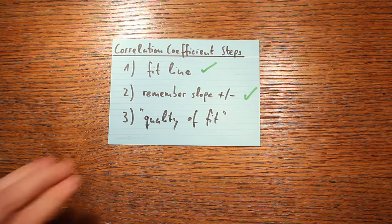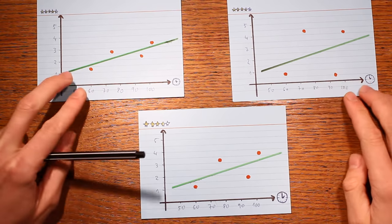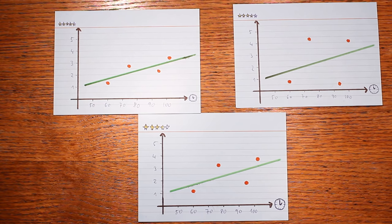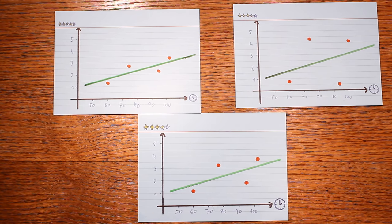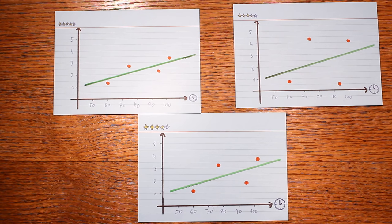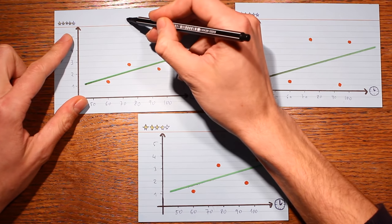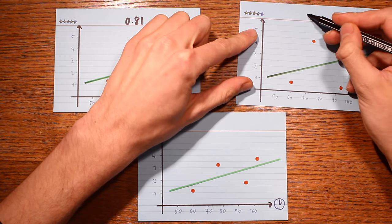Here are three scatterplots with regression lines already drawn in. Which of these three lines fits its data the best? It's this one, because the data fits most snugly around it. And which line fits its data the worst? That one, because the data scatters the most around it. So the highest correlation is in the best-fitting plot, and the lowest in the worst. The correlation coefficient for the best plot is around 0.81 and for the worst plot it's 0.32.